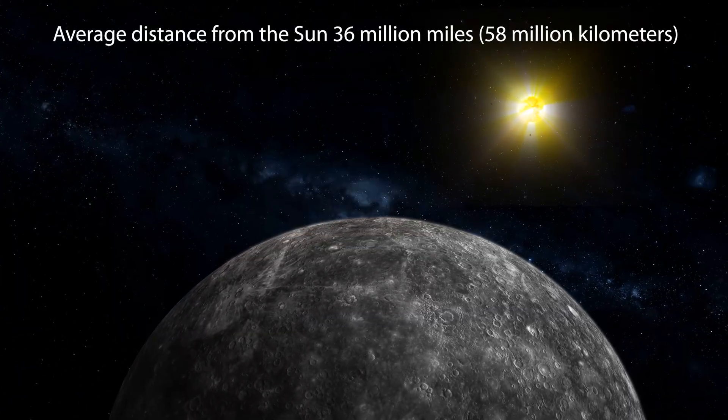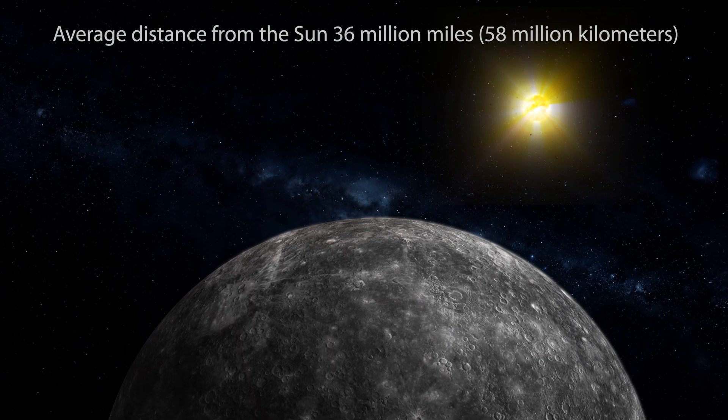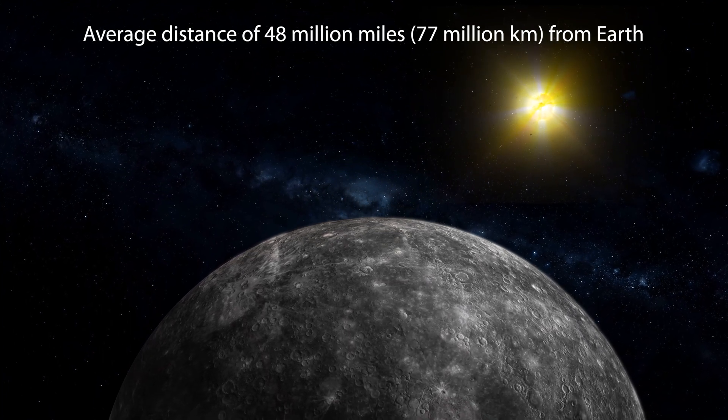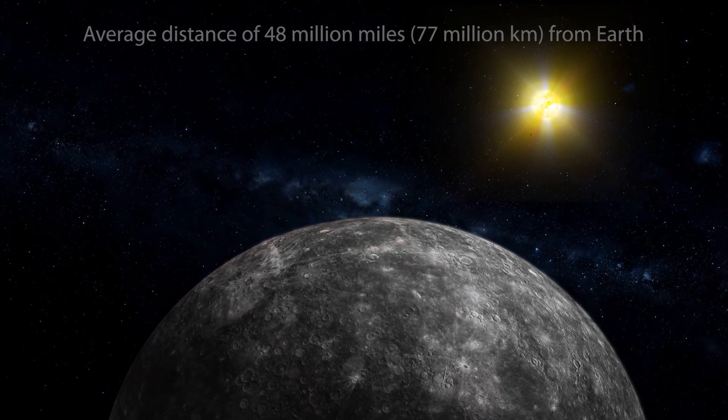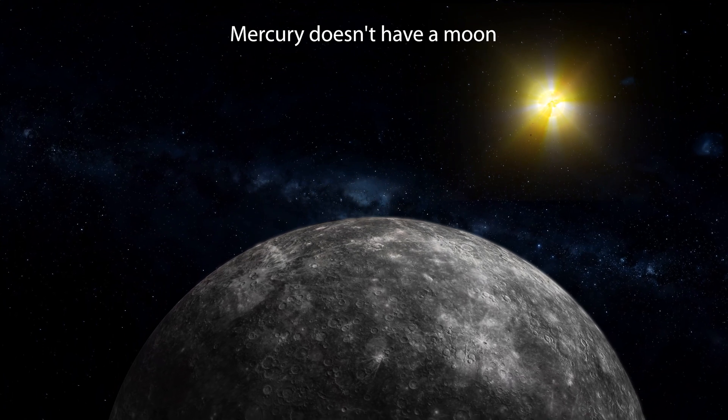The average distance from the sun is 36 million miles. The average distance from Earth is 48 million miles. Unlike Earth, Mercury doesn't have a moon.